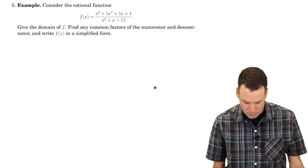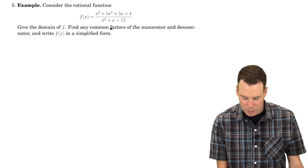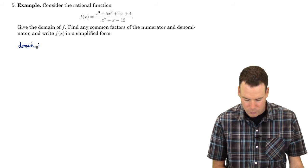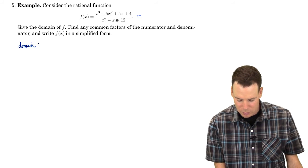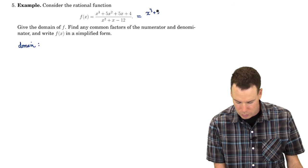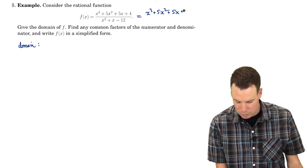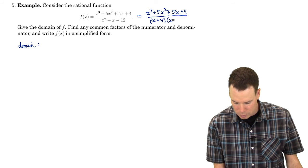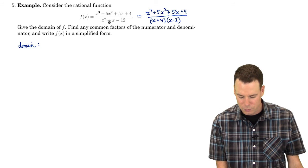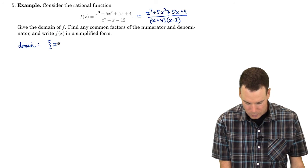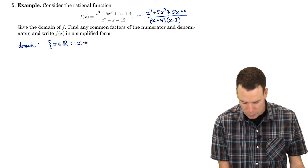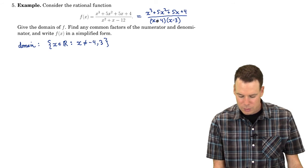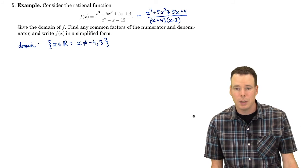Let's go back to the simplification problem. We're given a rational function and want to find the domain, any common factors between top and bottom, and write it in simplified form. To find the domain, we exclude values where the denominator vanishes. Factoring the denominator as (x+4)(x−3), the domain is all x in ℝ excluding −4 and 3.